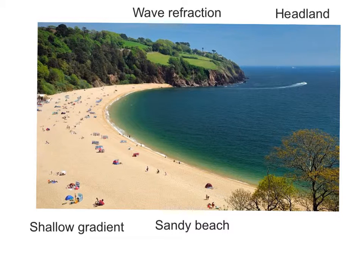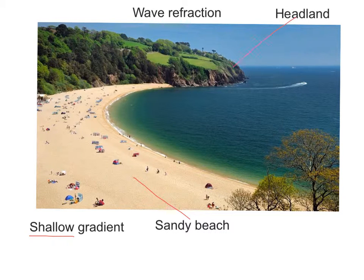Let's take a look at this photograph. Quite obviously the beach is a sandy beach, and you can infer that it will have a shallow gradient simply because it consists of sand rather than shingle. The other thing you can infer is that, although you can see a headland — that's obvious — if you look at the waves in the photograph, you might be able to infer that the waves have been refracted.